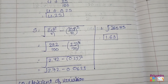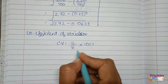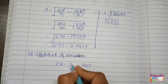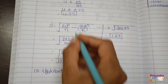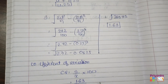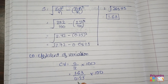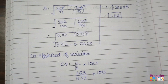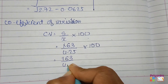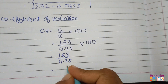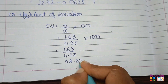Now keep these values into the coefficient of variation formula: standard deviation 1.63 divided by mean 4.25, multiplied by 100. That gives 163 divided by 4.25, and the answer is approximately 38.35%.